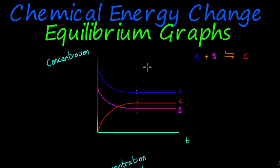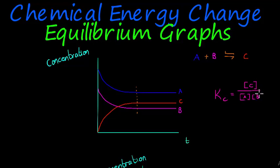At this point all of the components in the reaction level out and stay constant at a horizontal position — we have reached equilibrium. We can now calculate our equilibrium constant KC by taking the concentration of C divided by the concentration of A and the concentration of B, using the coefficients as exponents.